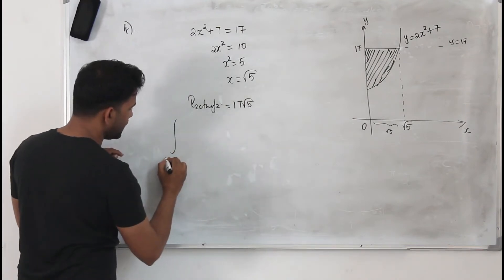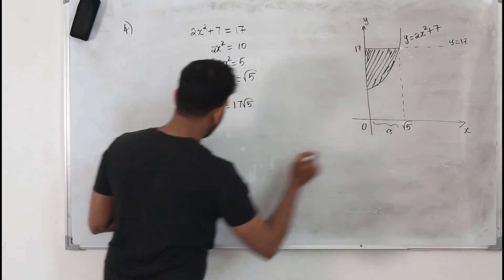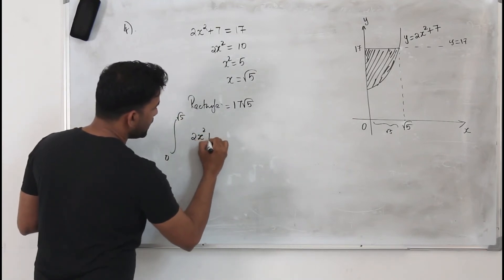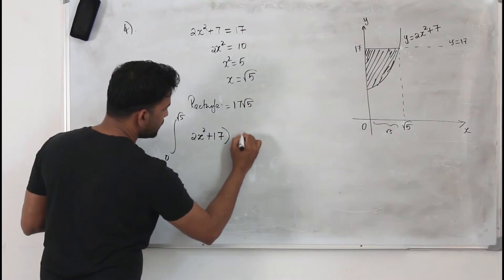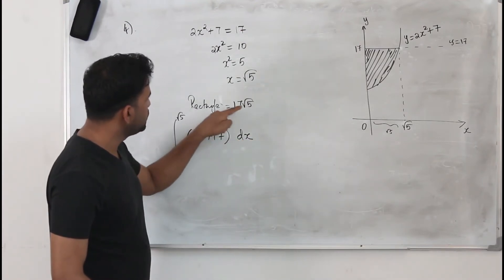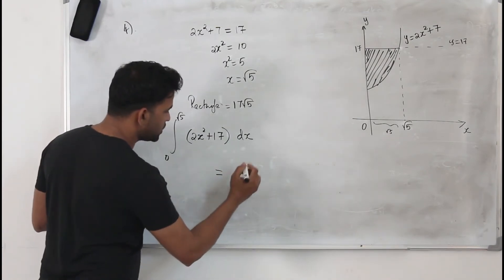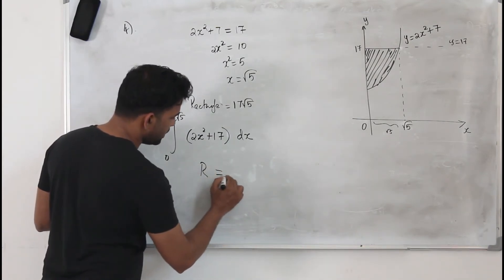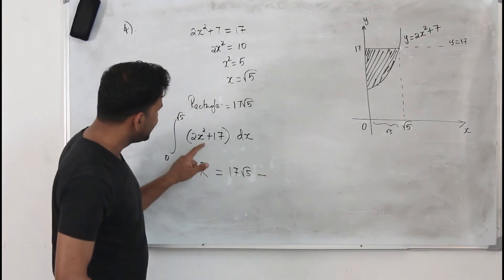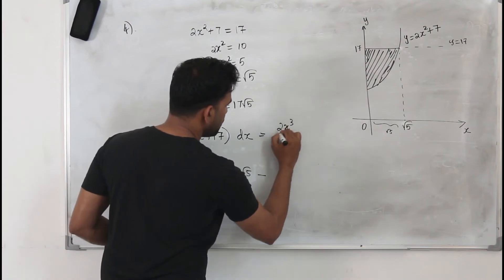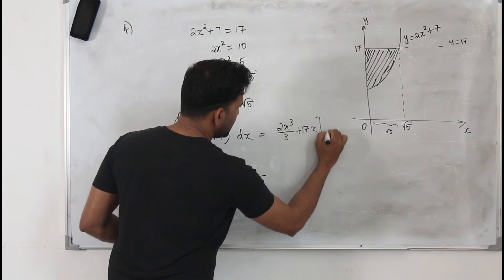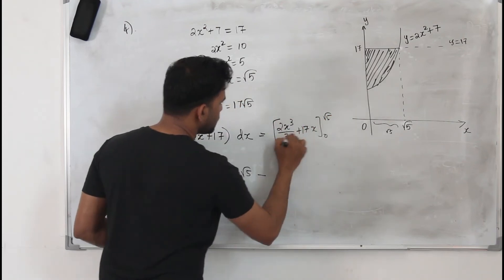Now how do we find this below area? The below area is integral, your x limits 0 to square root of 5, y dx. Your y is the equation of the curve. So find this value, this minus this will give you your answer. That means your shaded area R will be 17 root of 5 minus this answer. This answer will be 2x cubed by 3 plus 17x...